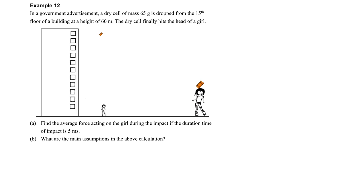Let's see the last example here. Suppose there is a dry cell falling down from the building. Make sure you change the unit to kg first, and accidentally it hits the girl.